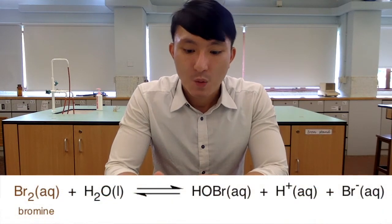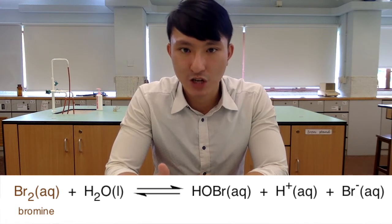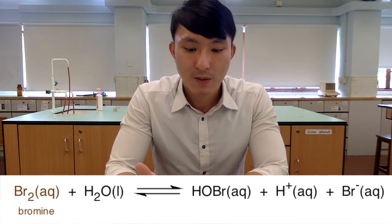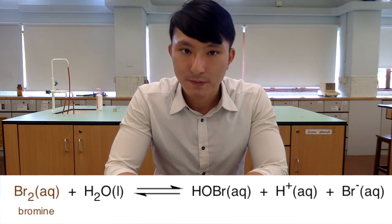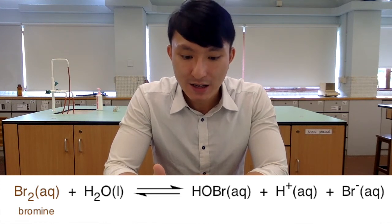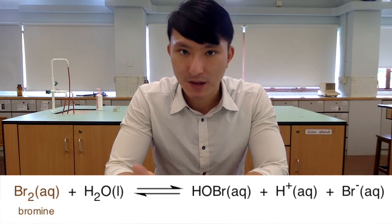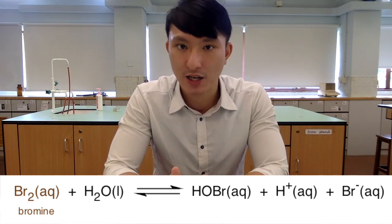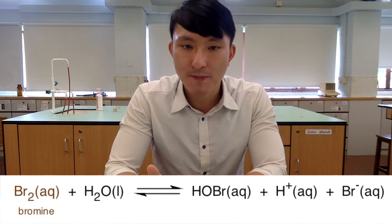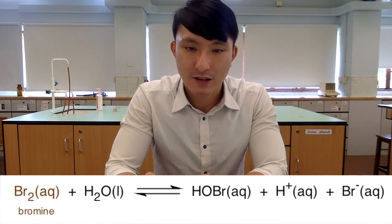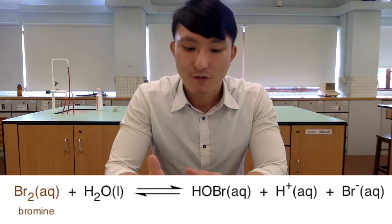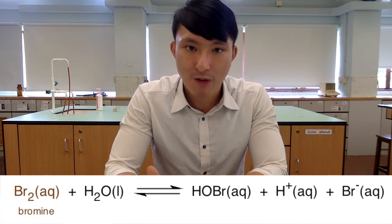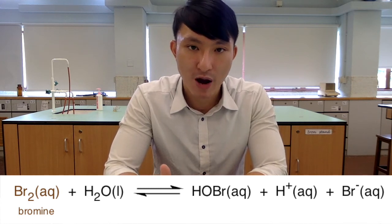For the second equilibrium system, when we add sulfuric acid into bromine water, the color doesn't change much. Adding acid increases H+ concentration, shifting the equilibrium to the left and producing more brown bromine. Since the mixture is already brown, the change is not very obvious, though theoretically the brown color intensity should increase. When we add sodium hydroxide, it neutralizes the H+, shifting the equilibrium to the right, consuming more brown bromine and producing more colorless products. The concentration of brown bromine decreases significantly, so the reaction mixture changes from brown to colorless.